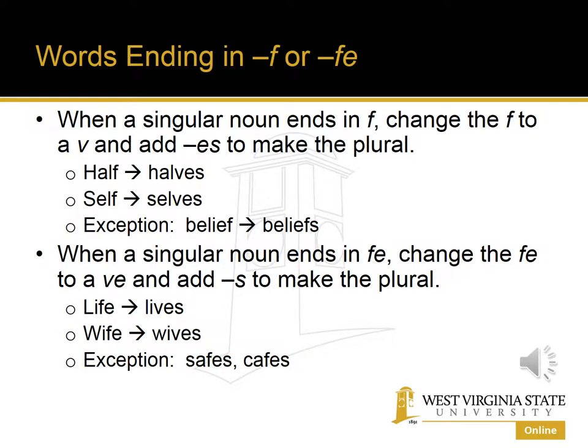Another spelling rule, although unfortunately there are exceptions, occurs when a singular noun ends in F. To form the plural, we change the F to a V and add E-S. For example, half becomes halves, or self becomes selves.